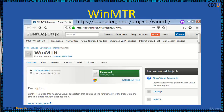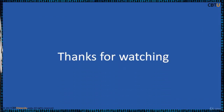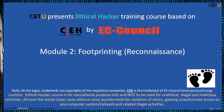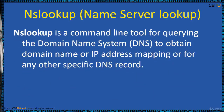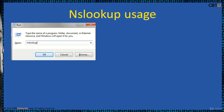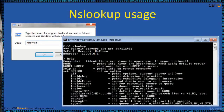WinMTR is available as source code and you can download a copy from a mirror as well. Moving on to Module 2, Footprinting, Section: NSLookup. NSLookup is a command-line tool for querying the Domain Name System (DNS) to obtain domain name or IP address mapping, or any other specific DNS record.